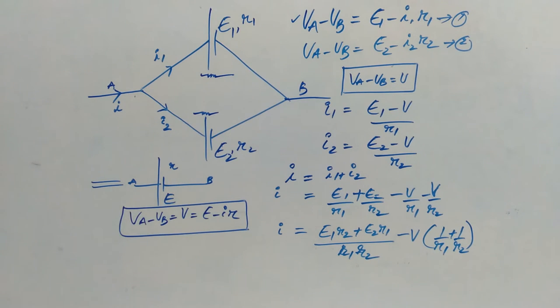then we can write VA minus VB which we are considering V as E minus I times R. Now, if we calculate I from this equation E by R minus V by R.